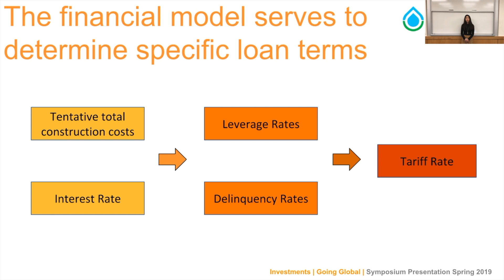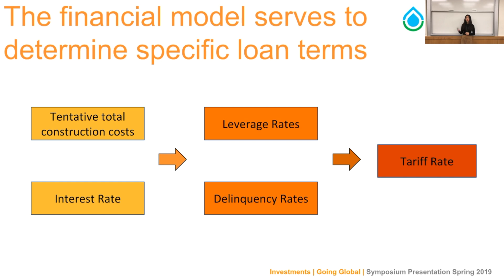Our financial model serves as a framework to determine loan terms when approaching investors. We look at construction costs, interest rates investors require, leverage rates — the percentage of construction costs paid by a grant versus a loan — and delinquency rates, which is the percentage of community members that do not pay their tariff. The model creates a tariff that community members must pay to fulfill the loan, while also assessing the community's ability to pay and negotiating with investors to find a loan structure that gives investors their desired rate of return.